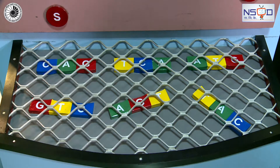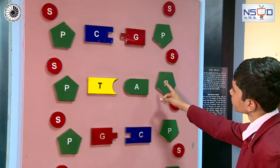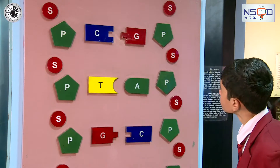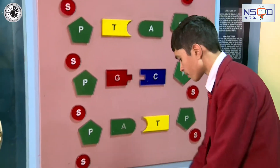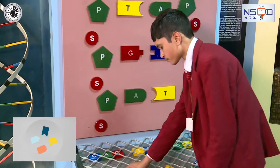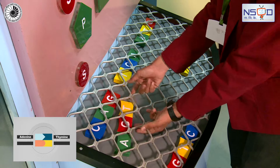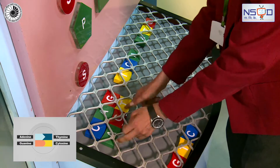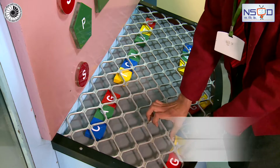Try to base pair the colored blocks with one another. You will find that some of them fit together while some do not. You will notice that adenine always pairs with thymine, and cytosine always pairs with guanine.